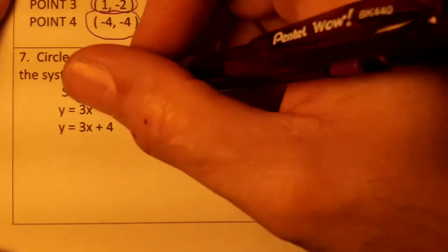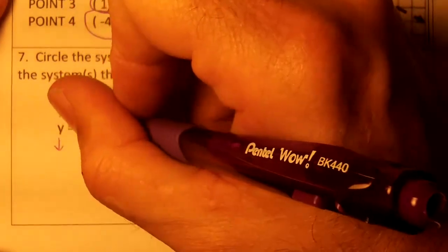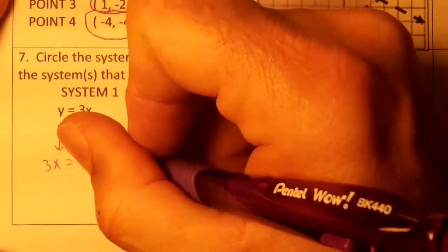Okay, right here we know that y equals 3x and y equals 3x plus 4. I'm going to replace this y with 3x. So I know that 3x equals 3x plus 4.